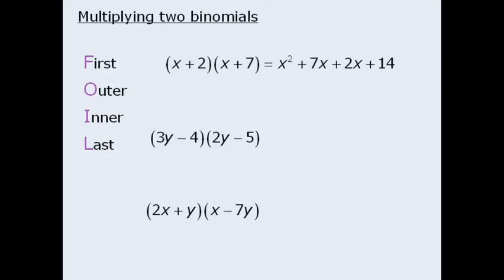At this point we can simplify this expression if we recognize that 7x and 2x are like terms. As such we can combine them to get 9x. So when we expand and simplify x plus 2 times x plus 7 we get x squared plus 9x plus 14.